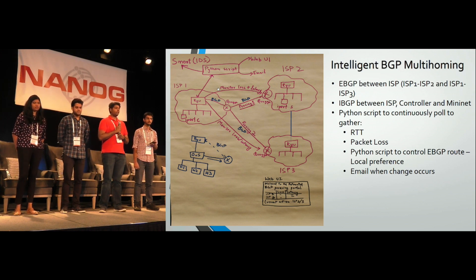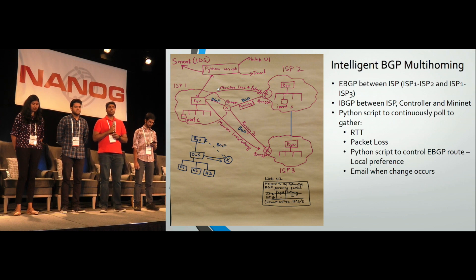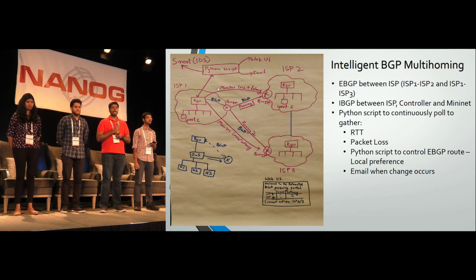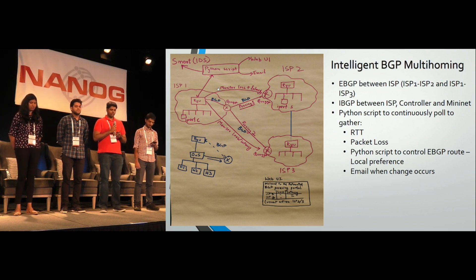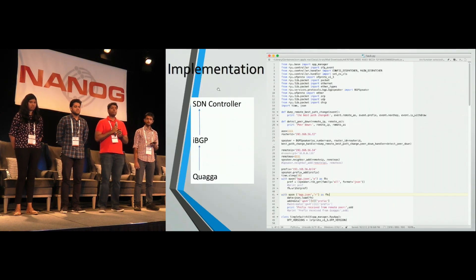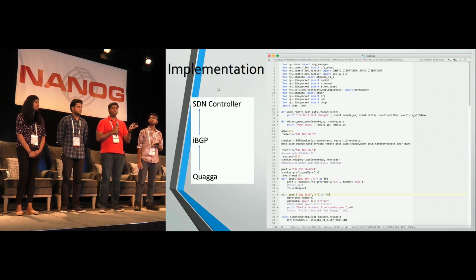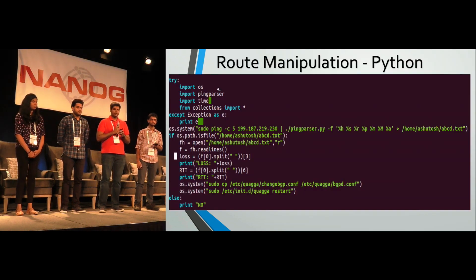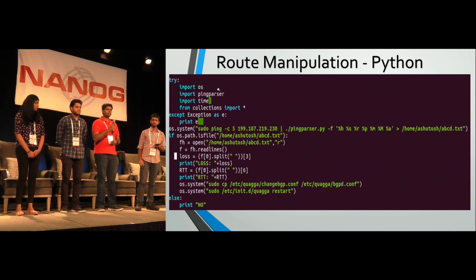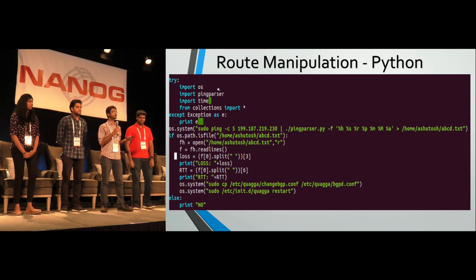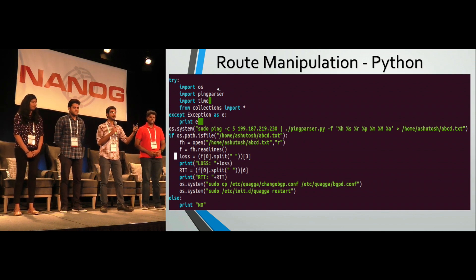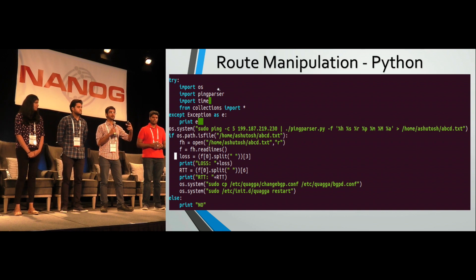You might wonder what's different from what's happening in the real world. The major thing we tried to achieve in the six hours of the hackathon was to automate a rerouting scenario — that's how it becomes self-healing. We have a Python script that polls the different Quagga routers to measure packet loss and RTT, and depending upon the values, it selects the best path.